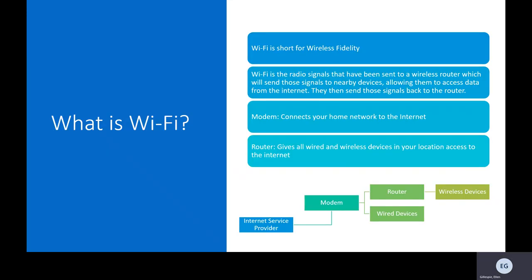Before we get into the meat of our presentation, we should start by going over exactly what Wi-Fi is. Also known as wireless fidelity, Wi-Fi is the radio signals that have been sent to a wireless router, which will in turn go to nearby devices, allowing them to access data from the internet.